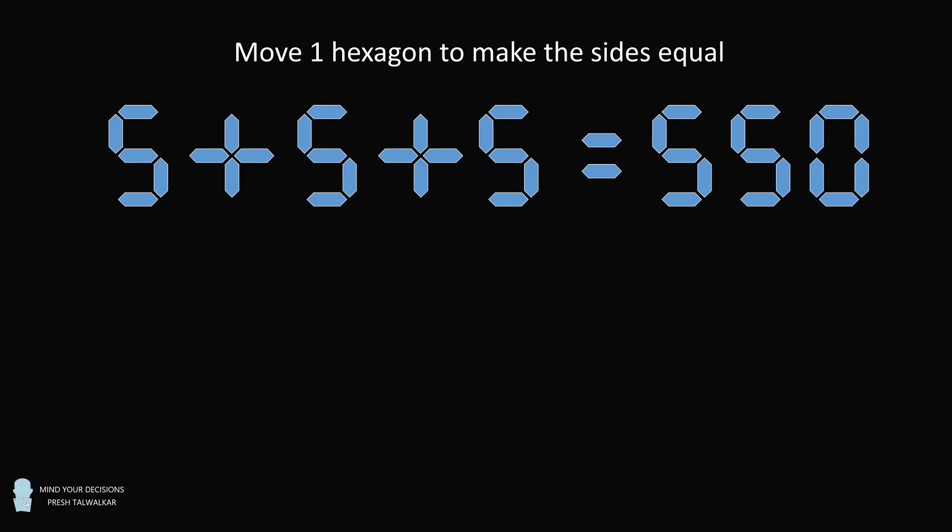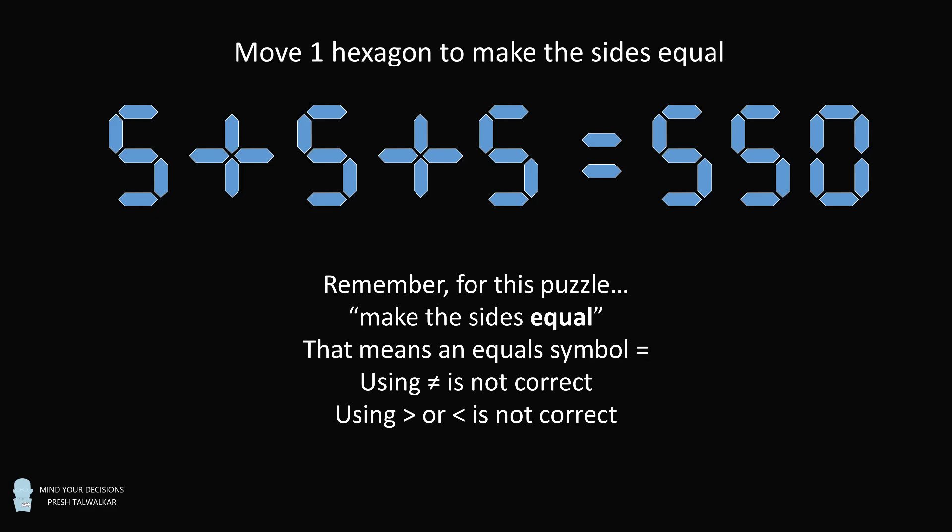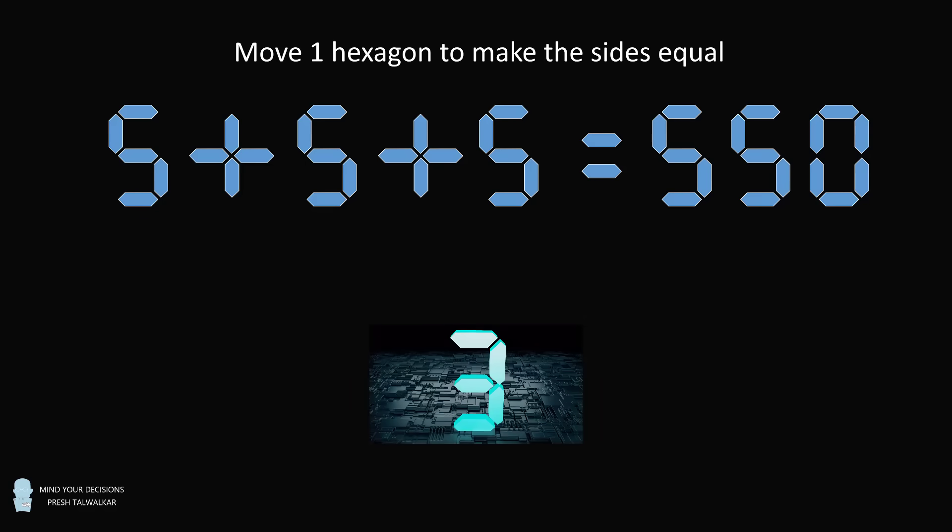Here's the puzzle. You need to move one hexagon to make the two sides equal to each other. Can you do it?